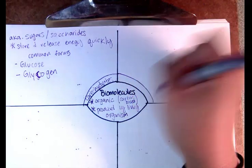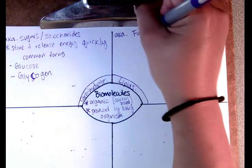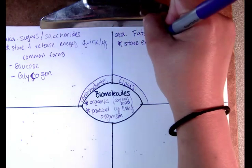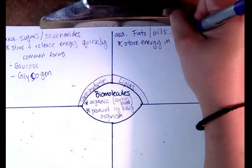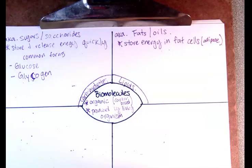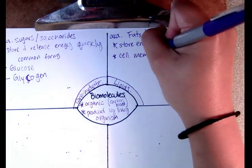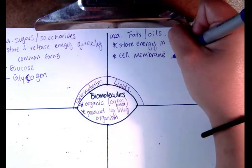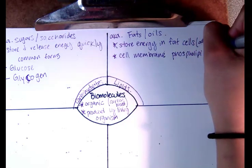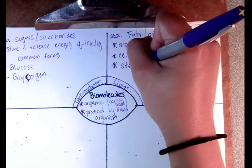The next category of biomolecules is lipids, also known as fats or oils. Lipids are also going to store energy, usually in fat cells or adipose tissue. They're also responsible for your cell membrane — we'll go into that more later — and a type called phospholipids plays a key role there. Lipids are also responsible for steroids found throughout your body.